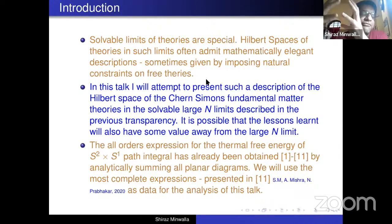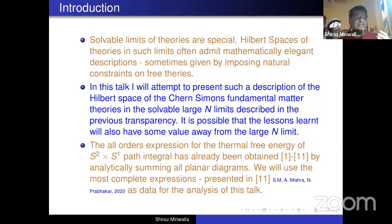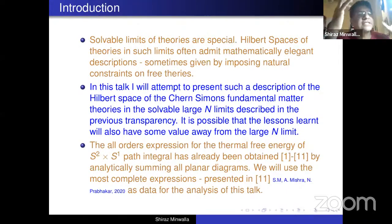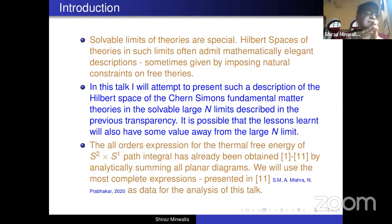Now, solvable theories — solvable limits of theories — are special. Nice things happen in solvable limits. In particular, if you've got a solvable theory, you should expect that the Hilbert space of that theory has a nice structure. In this talk, I'm going to attempt to answer the question: what is a matter Chern-Simons theory, by trying to give you a humanly understandable description of the Hilbert space of this theory. Everything I say in today's talk will be only at large N, but we're hoping that some of these lessons will persist away from large N, perhaps in the analysis of supersymmetric indices.